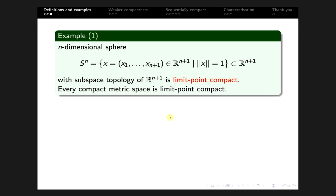For example, the n-dimensional sphere S^n, which is the set of all points in (n+1)-dimensional Euclidean space whose norm equals 1, is a bounded and closed subset of R^(n+1). Hence S^n is compact, and therefore it is limit point compact. Basically, every compact metric space is limit point compact.